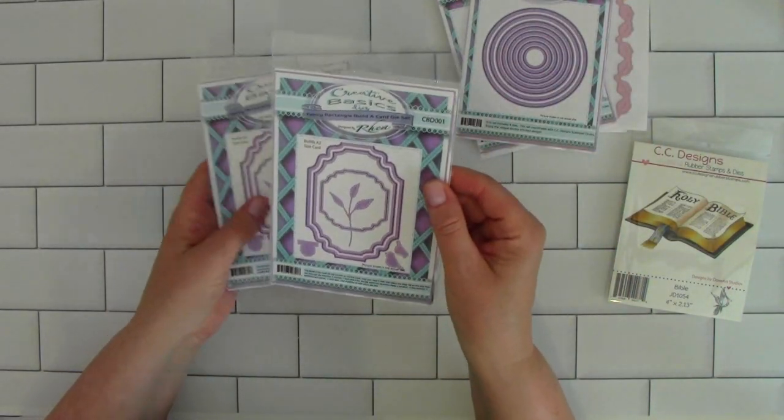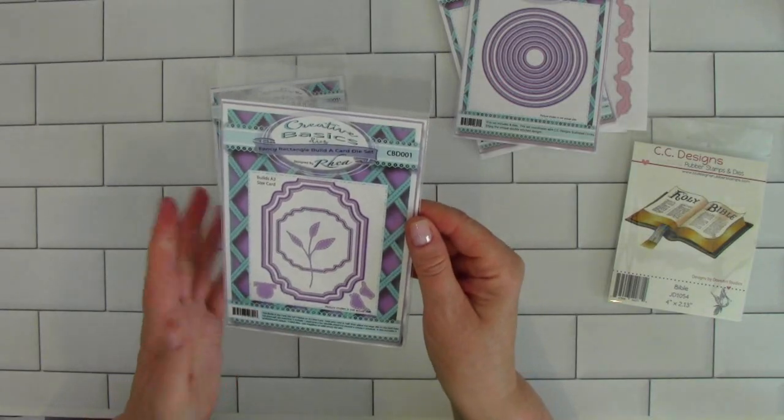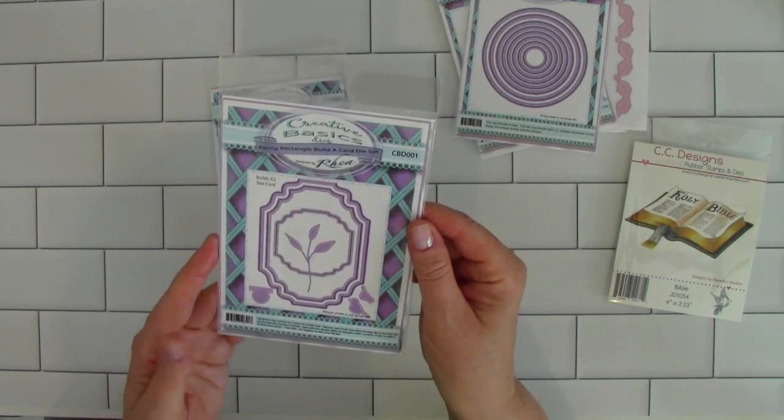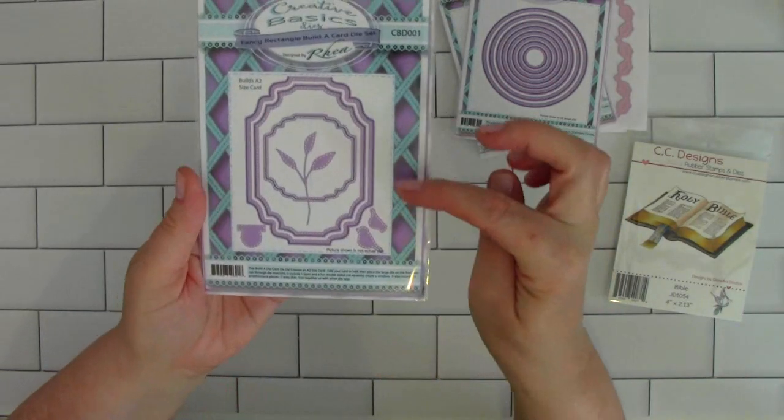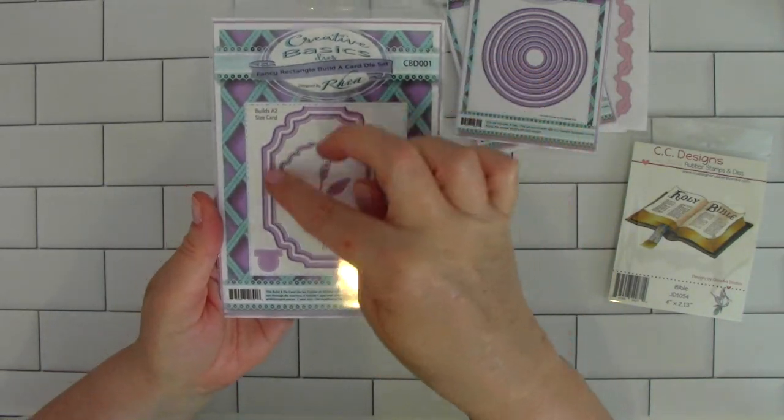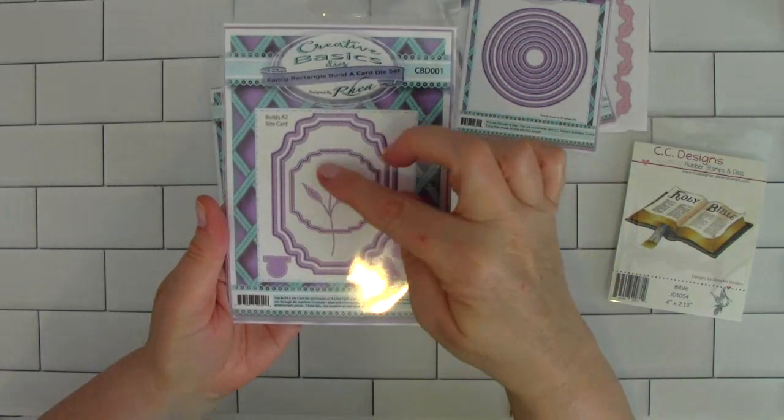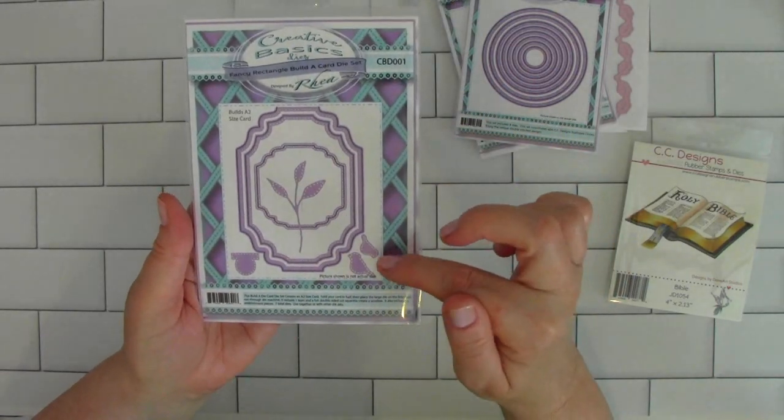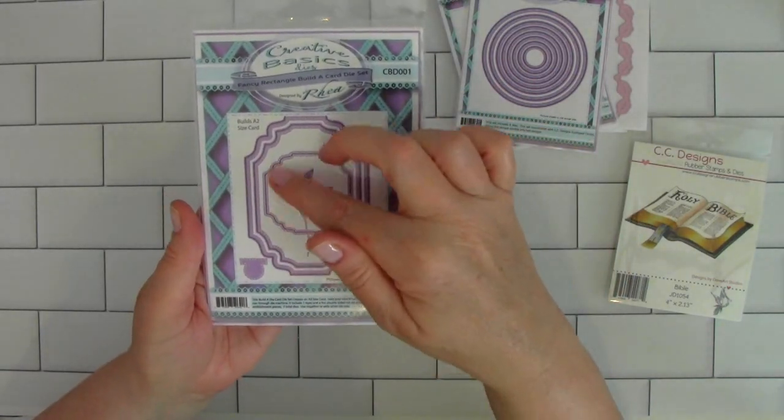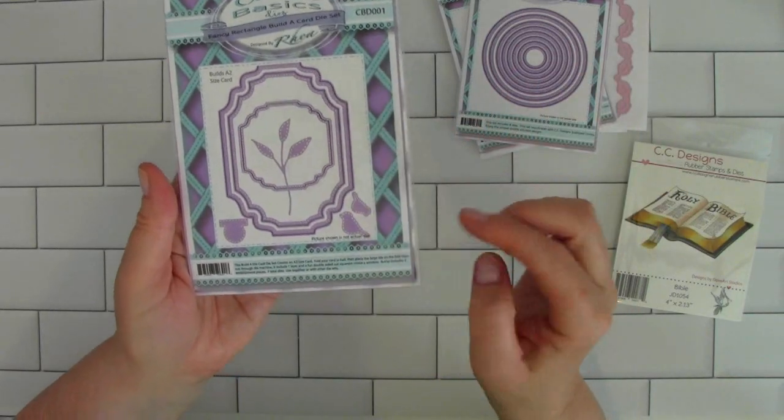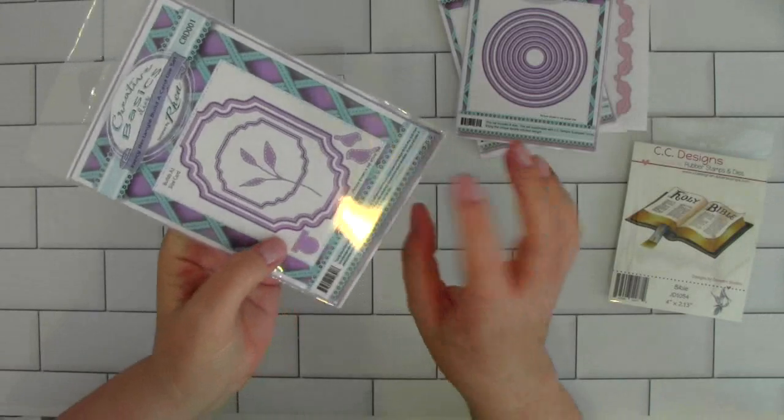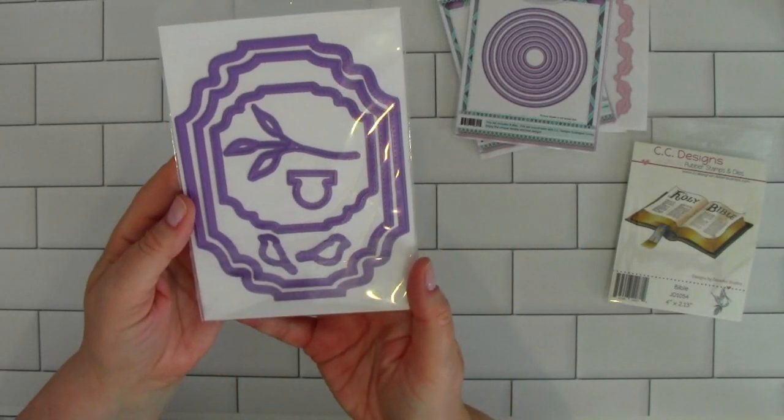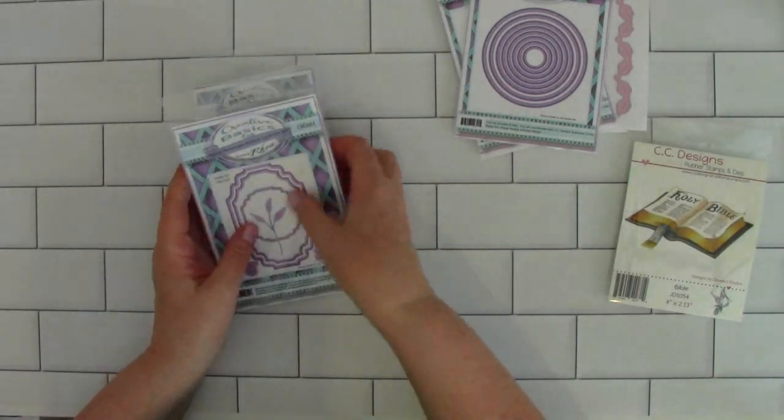Then I picked up two of these fancy rectangle build a card die sets and they have stitching as well. You get the two large frames, a smaller frame, a beautiful plant, a stem, a couple of little birds, and a little tab.